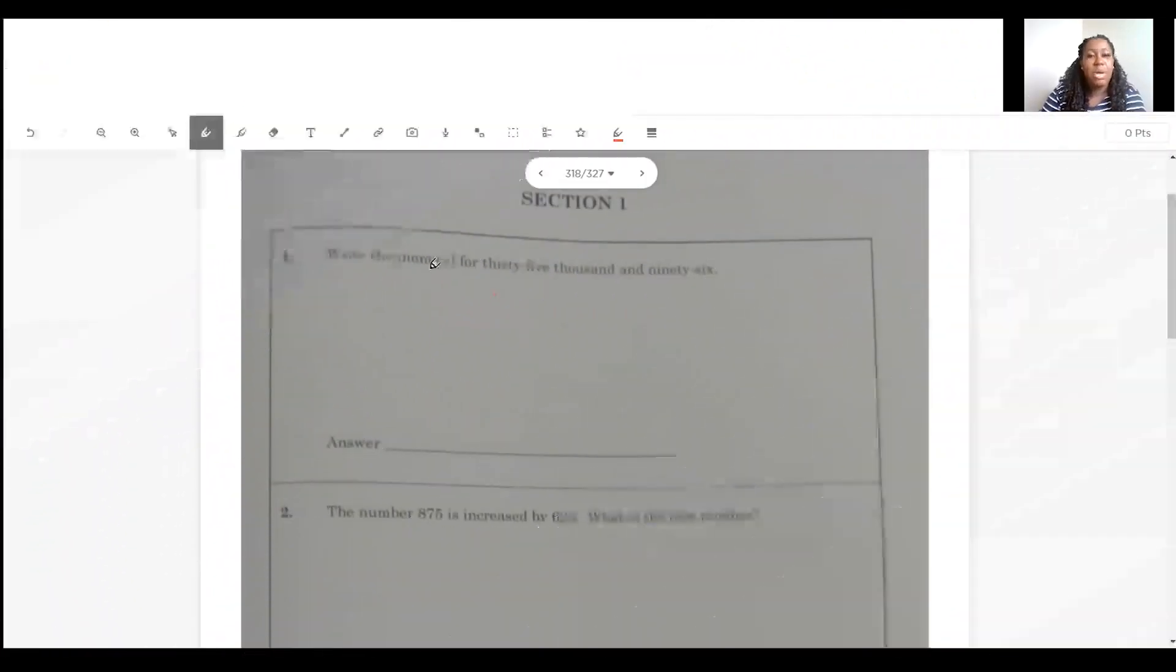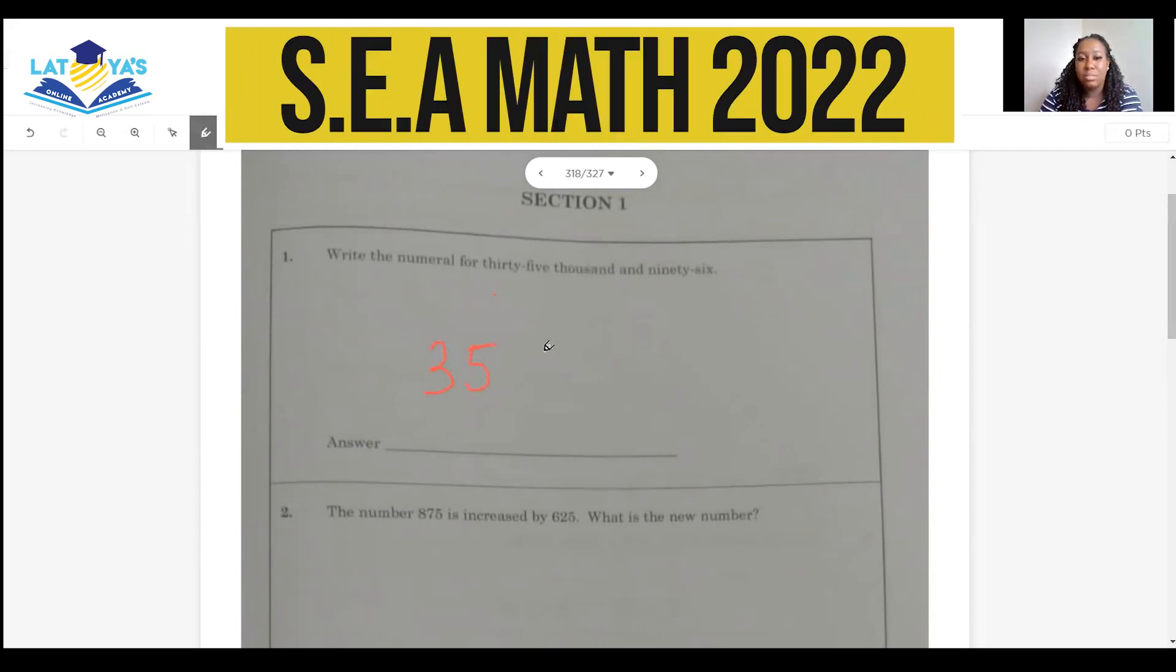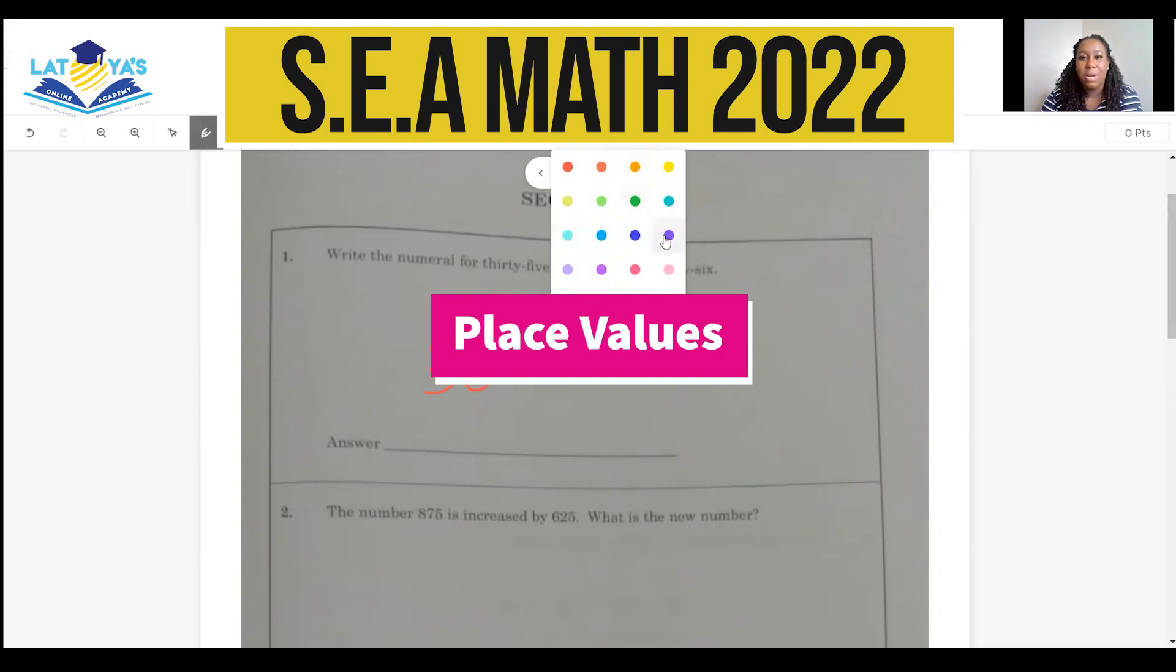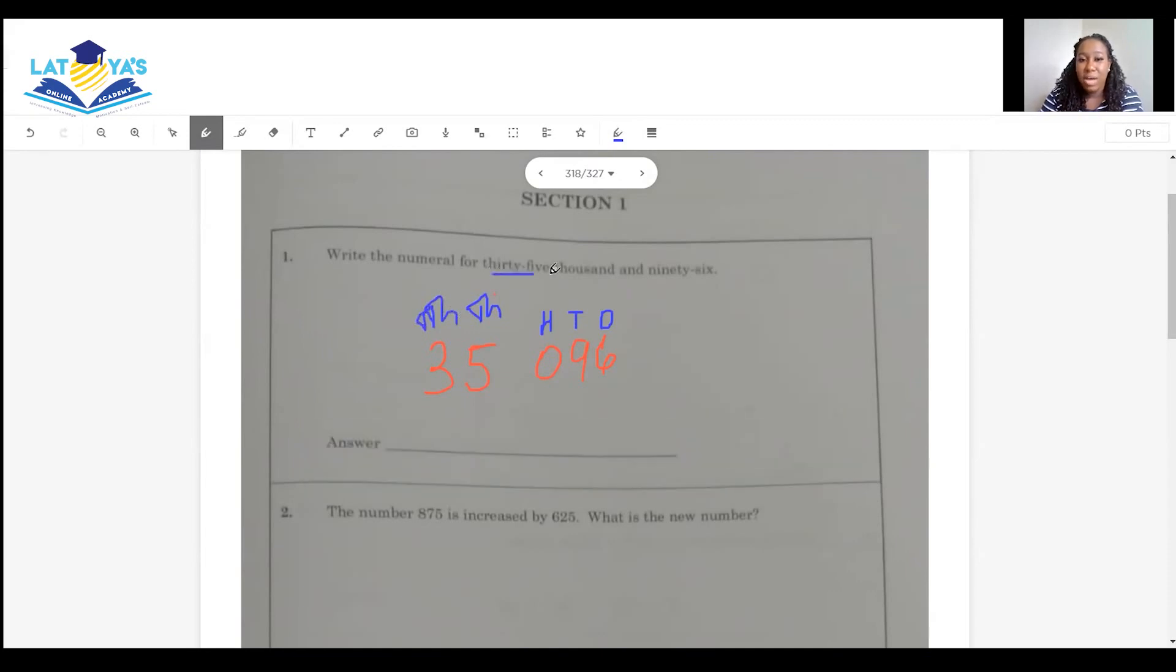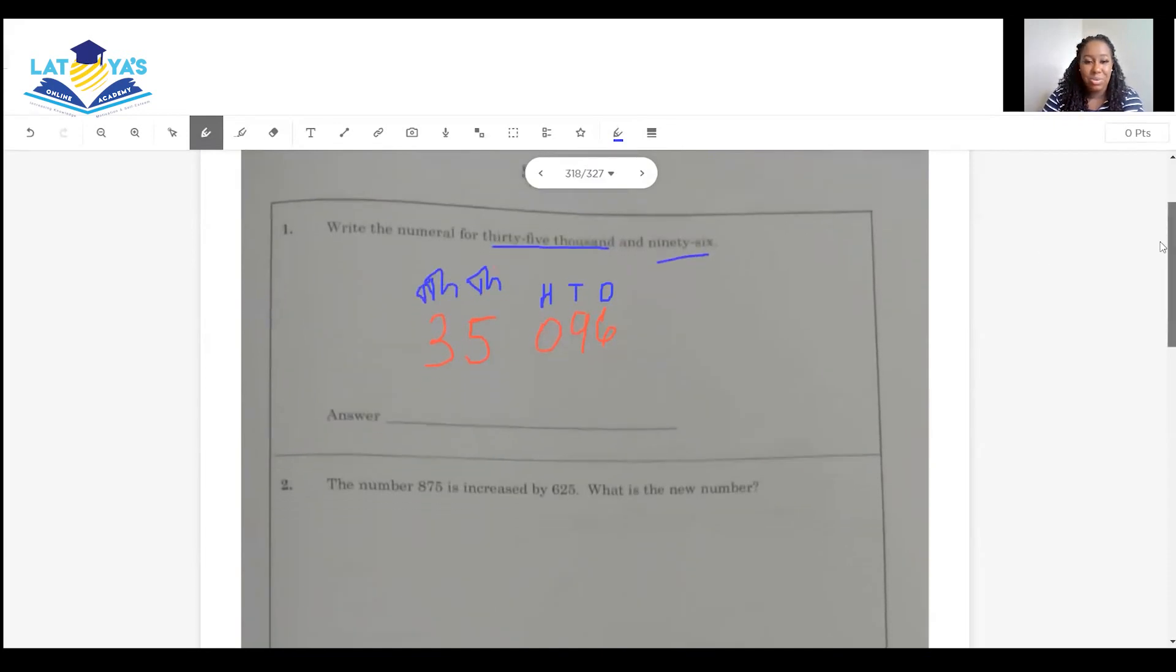Question one, write a numeral for $35,096. This is a really easy first question. So $35,096. And for those of you who have problems with place value, I always tell you, write your values at the top of numbers to help you. So this is what you'll do. And tens of thousands. So $35,096, this is the answer.